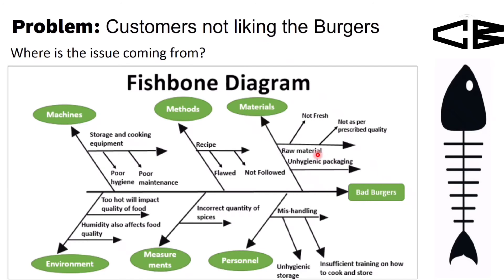You need to find whether the issue is with the materials, or with the methods used, or any problem with the machines, or the environment, or the measurement, or a personnel issue. You list causes under each category header and start analyzing them. Once you are clear on the categorization and the cause, you take it as an input to the 5 Why method.